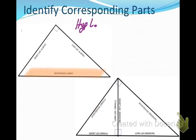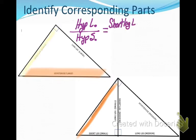For instance, if you took the hypotenuse of the large triangle and set it in a ratio with the hypotenuse of the small triangle, that would have to equal the same ratio of the short leg of the large triangle to the short leg of the small triangle. Notice I'm putting corresponding parts over each other, hypotenuse over hypotenuse, short leg over short leg.